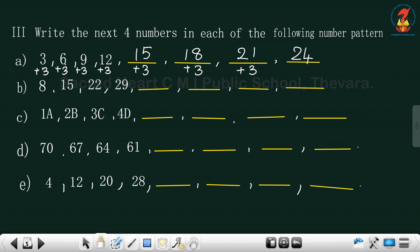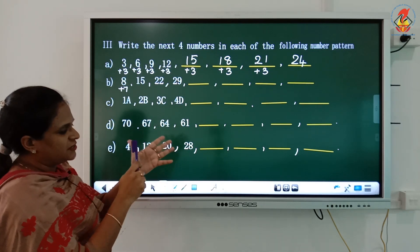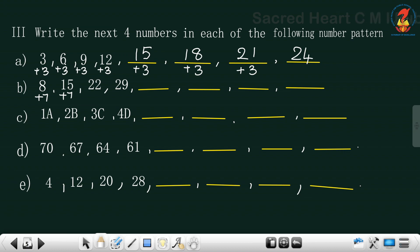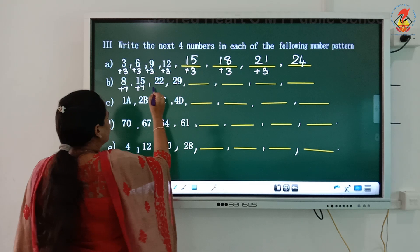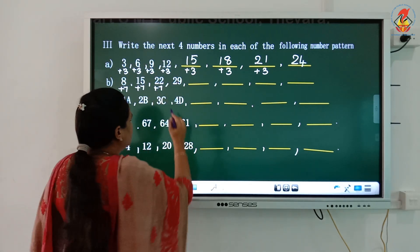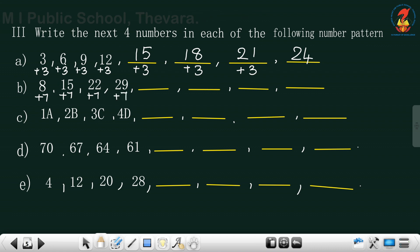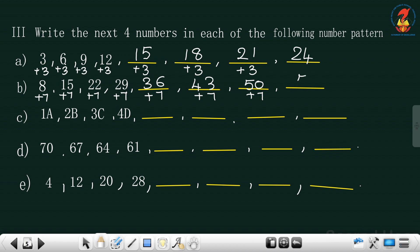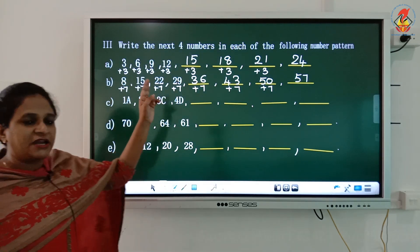Next pattern: 8, 15, 22, 29. From 8 to 15 is plus 7, from 15 to 22 is plus 7, from 22 to 29 is plus 7. So 7 is being added to each number. Continuing: 29 plus 7 is 36, 36 plus 7 is 43, 43 plus 7 is 50, 50 plus 7 is 57. So the next four numbers are 36, 43, 50, 57.